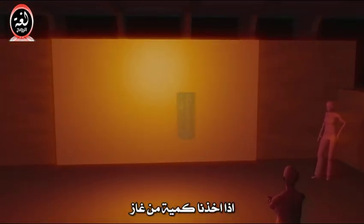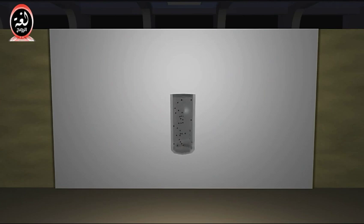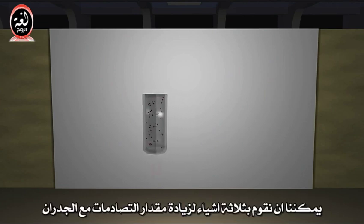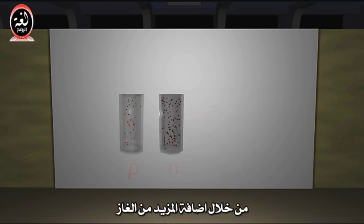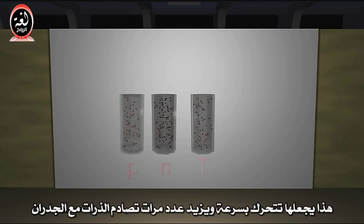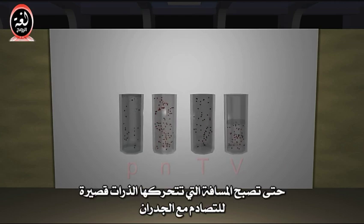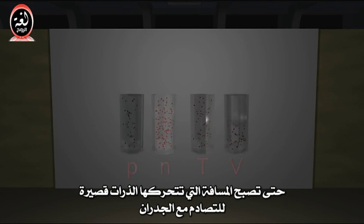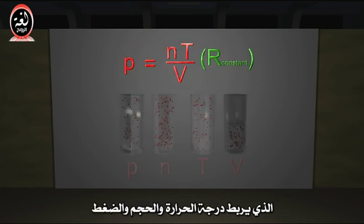If we take a quantity of gas and enclose it in a container, the individual molecules in the gas consistently bang into the walls of the container, creating a pressure on the walls. We can do three different things to increase the number of wall collisions: increase the number of atoms in the container by adding more gas, or increase the motion energy of the atoms already in the container by heating the gas — this makes them go faster and increases the number of times each atom hits the wall — or we can make the container smaller, decrease the volume, so that the individual atoms have shorter distances to go to collide with the wall. This leads directly to the ideal gas law relating temperature, volume, pressure, and quantity of gas.